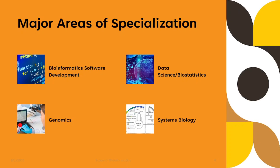What are the major areas of specialization within BS Bioinformatics? There are two main areas you can choose to specialize in: the development side and the application side. On the development side, you will learn more about programming, coding, software development, and database management. On the application side, you can become a data scientist, biostatistician, genomics expert, or systems biology specialist.